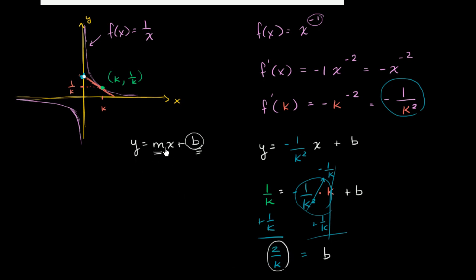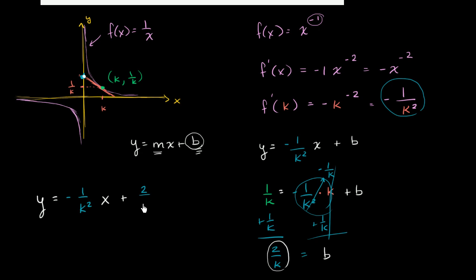If we wanted the full equation of the line, we've done all the work. It's going to be y equals negative 1 over k squared times x, plus our y-intercept, plus 2 over k. And we're done.